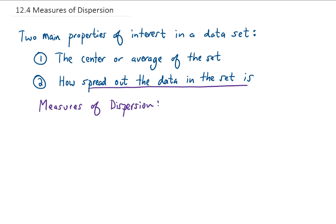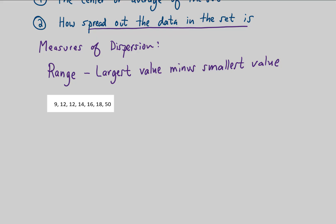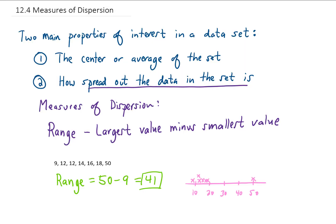The first measure of dispersion is called the range. The range of a set of data is simply the largest value minus the smallest value. For this set of data, the range is 50 minus 9, which gives us 41. If we graph all of our data values on a number line, the range gives us some measure of how spread out, or variable, our data is.